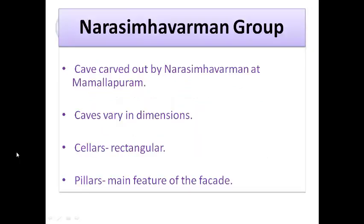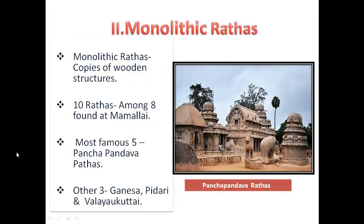Next, the Narasimha Varman group among the Rock Cave division. The caves carved out by Narasimha Varman are found at Mamallapuram. These caves vary in dimensions; the cellars are rectangular, and the pillars are the main feature of the facade. The second division of Pallava architecture is the Monolithic Rathas. The Monolithic Rathas, in the same style as the Mantapas, are clearly copies of wooden structures. There are 10 Rathas, among which 8 are found at Mamallapuram. The most famous 5 are called Pancha Pandava Rathas.